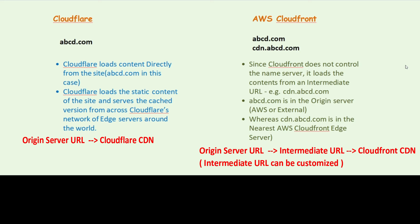In the case of AWS CloudFront, since it does not control the name server, it cannot directly load from the origin server. Instead, it loads the contents from an intermediate URL. In this specific example, that would be cdn.abcd.com, where abcd.com is the origin server — which can be an AWS server or an external server. The contents are pulled from this intermediate URL, which is nothing but the nearest AWS CloudFront edge server.